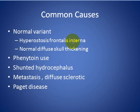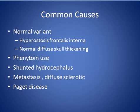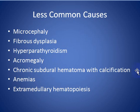Hyperostosis frontalis interna and normal diffuse skull vault thickening are normal variants. Phenytoin, a drug used for epilepsy, can cause calvarial vault thickening. Other causes include shunting for hydrocephalus, metastasis especially diffuse sclerotic metastases, and Paget's disease. The less common cause is microcephaly.